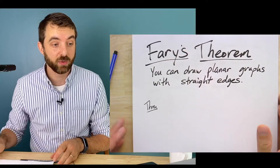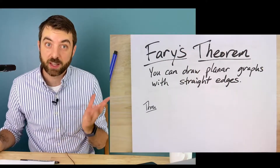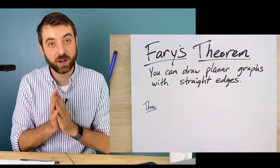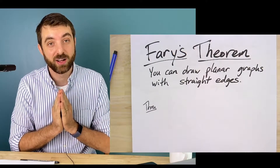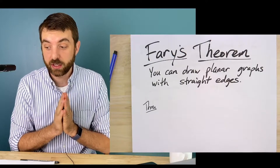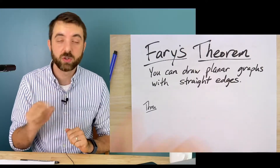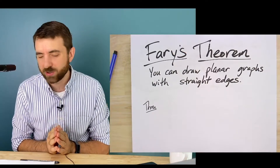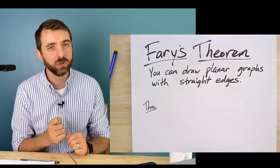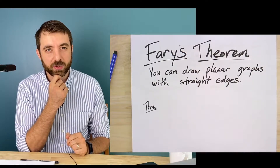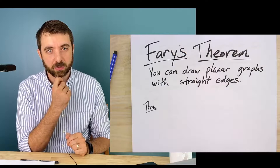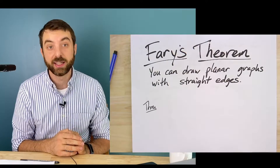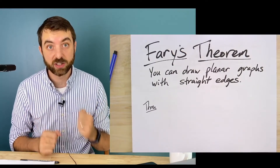My favorite example is always K4. The first time you draw K4, if you place four vertices in a square, you need to draw at least one edge so it's not straight. But you can rearrange it to be a triangle with a vertex in the middle, and suddenly you have all straight edges. Most people naturally wonder when they first start drawing planar graphs: can I do it with all straight lines? And the answer we're going to see today is yes, you can.